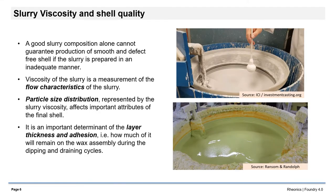It is well known that slurry viscosity is one of the most important factors in determining shell quality. Many defects in shell performance can be traced directly to improper slurry viscosity during shell building. Monitoring slurry viscosity has two major functions. Rising viscosity due to evaporation indicates the need for dilution. Changes in viscosity may alert the operator to problems with composition, adhesion, or other parameters important to shell quality.